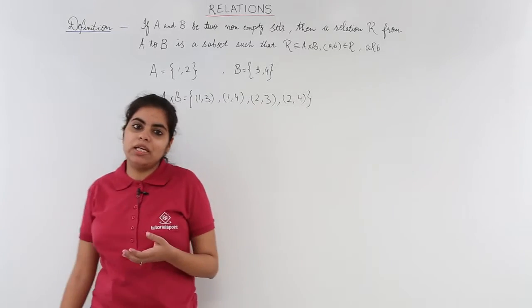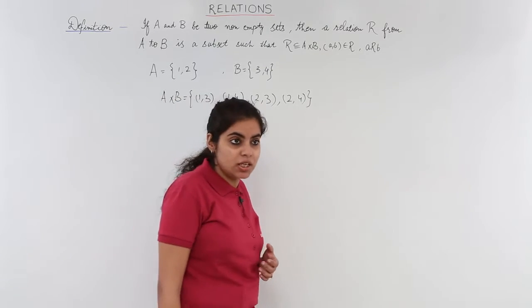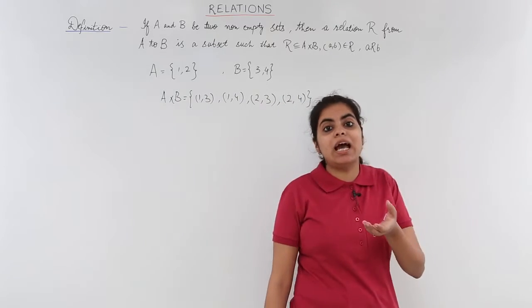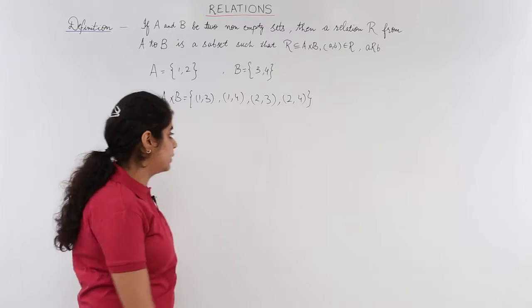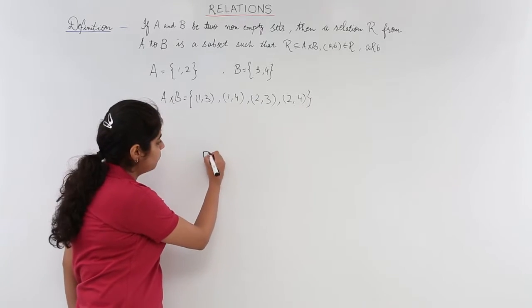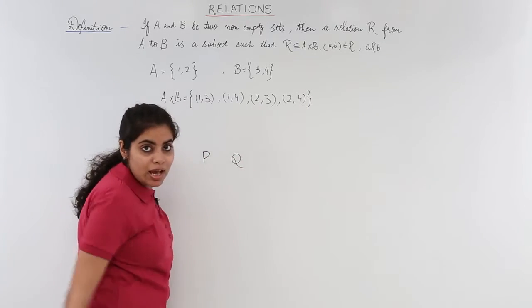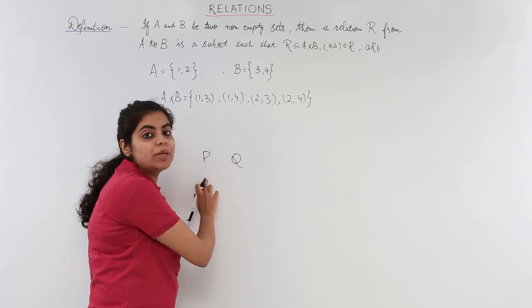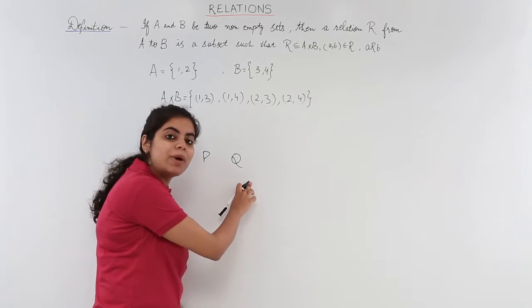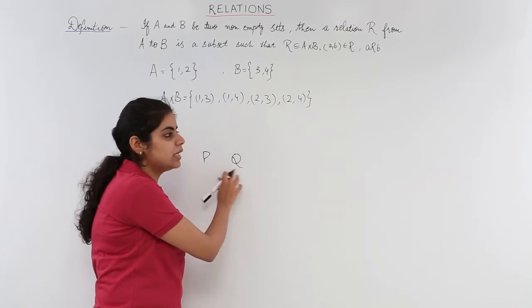If I say P and Q are related, it means that P and Q have some relation. For example, if I have P and Q as P is the brother of Q, that means P and Q are related by the relationship as P and Q are brothers.